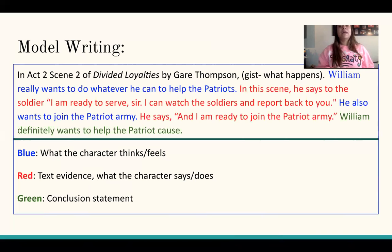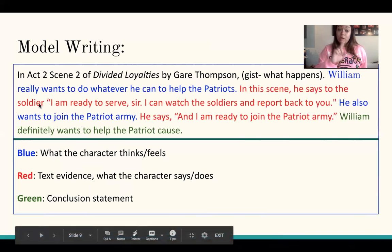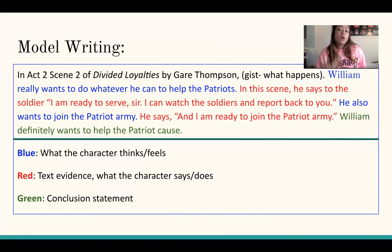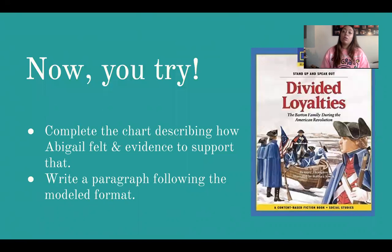With this model writing as your example, use your chart for Abigail and write a paragraph. Start with: "In act 2, scene 2 of Divided Loyalties by Garrett Thompson, [gist] happens." Then tell me how Abigail feels, give your evidence, give another thing she feels with its evidence, and finish with a conclusion sentence to wrap it all up. This is where the video ends — click back to your Google Doc, and when you're done, please make sure you're submitting so that I get the notification that you've completed the assignment. See you!